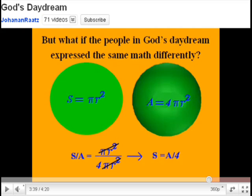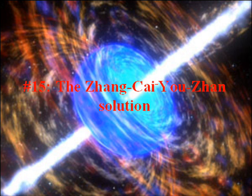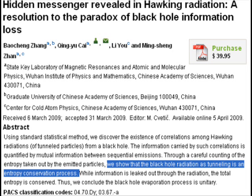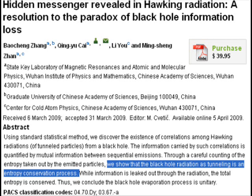So don't tell me that they don't believe in the holographic principle, or that this is somehow an alternate solution to the black hole information paradox. The 15th solution given is the Zheng Kai Yu-Zhan solution, and in this one they have information leaking out of the black hole via Hawking radiation again. In the abstract they say: 'We show that the black hole radiation as tunneling is an entropy conservation process.' This means entropy is conserved as it leaks out with Hawking radiation and the black hole shrinks, which automatically corresponds to the relation between entropy and surface area of the black hole as the black hole shrinks — hence the holographic principle. The 16th solution also entails information leaking out with Hawking radiation, and so that also accords with the holographic principle.